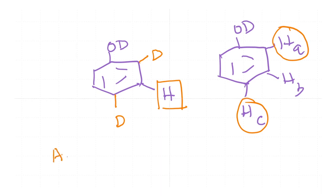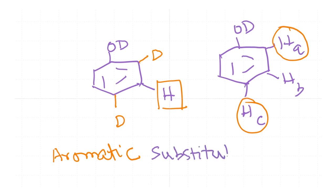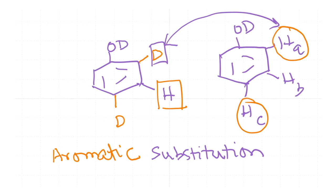First of all, the aromatic ring is involved, so it is an aromatic reaction. The second key feature is the substitution that is happening — you have a deuterium replacing a hydrogen — and therefore it is a substitution reaction. We are going to call it an aromatic substitution reaction. The mechanism of the reaction tells us that it is actually an electrophilic aromatic substitution. So now let us try to understand the mechanism of this reaction.